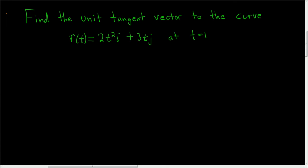We're asked to find the unit tangent vector to the curve r(t) = 2t²i + 3tj at t equals 1. There's an easy formula we can use to solve this problem.